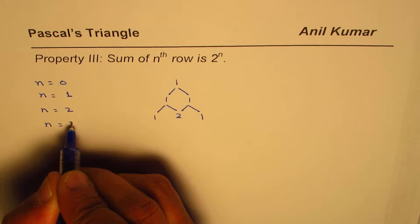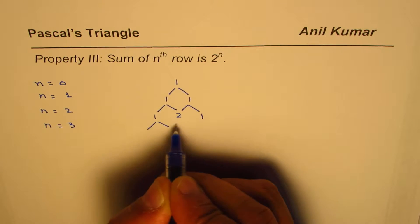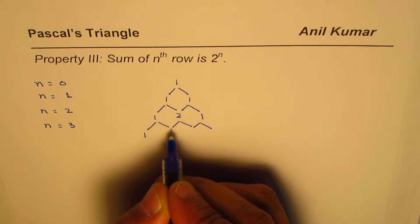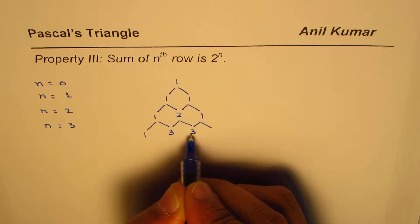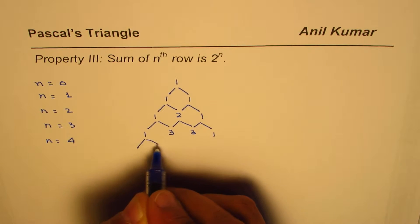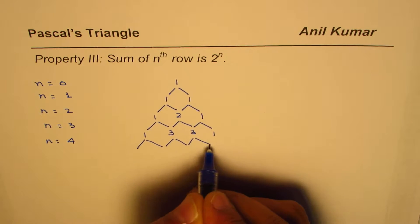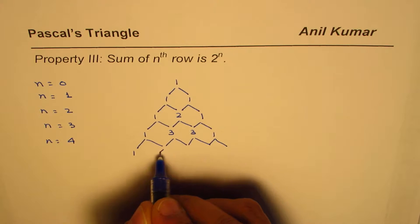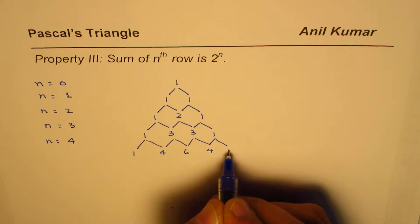If n equals 3, then we have 1. Add the previous 2 to get the next one. n equals 4 will give you, let's add them and write down. So 1, 4, 6, 4, 1. Great.